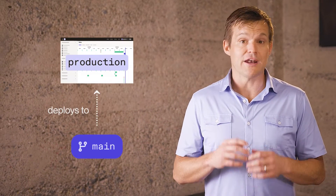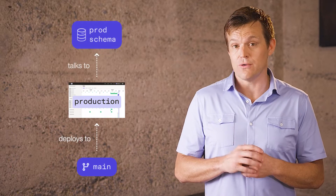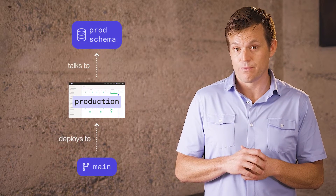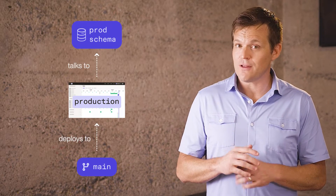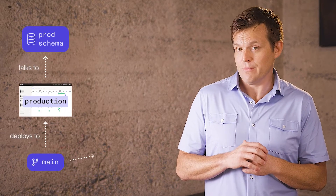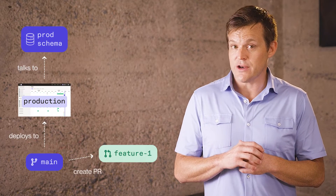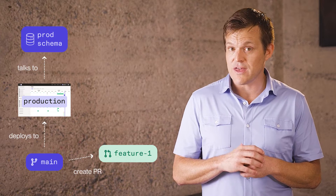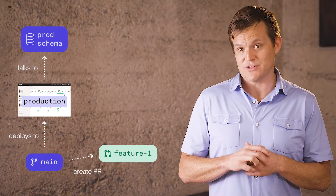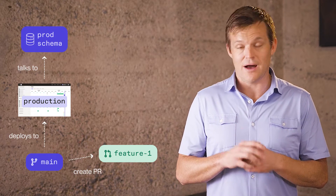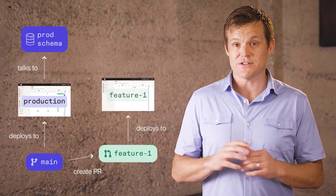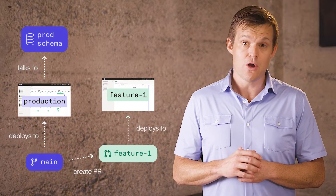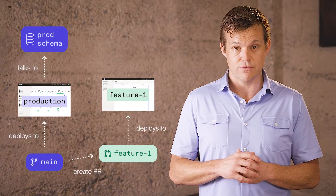For most users, they have a main branch that contains their code and a production deployment where that code is deployed. With branch deployments, you follow a familiar development workflow. You create a new branch, edit your code, and create a pull request. Then our out-of-the-box infrastructure takes over. On every push, it creates a lightweight staging environment from that PR where you can run and test your code.